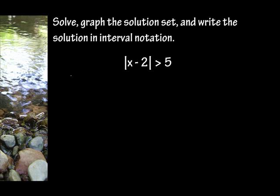So what we do is we write just what we see without the absolute value. Or, our next inequality is going to be x minus 2 is less than negative 5 — so it's the opposite of the inequality, and then it's the opposite of the number.